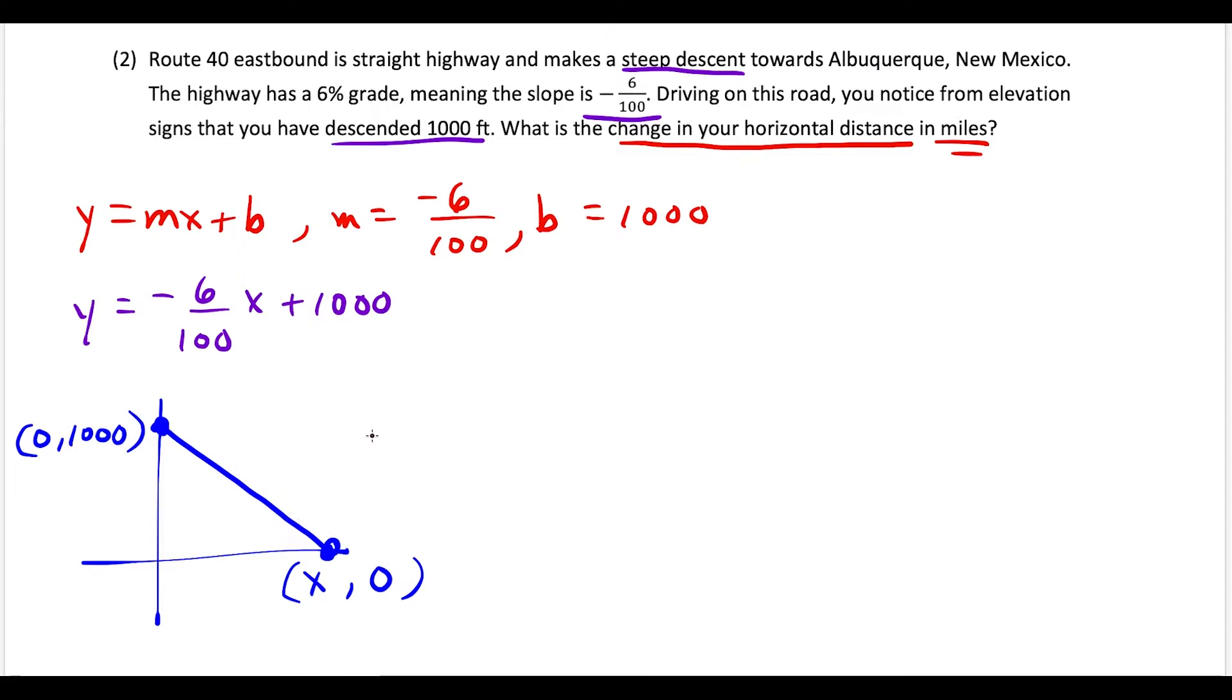Think about what we know here. We know the slope of our line is -6/100. In general, slope equals (y₂ - y₁)/(x₂ - x₁). So I could label this as (x₁, y₁) and label this point as (x₂, y₂). Now we plug in our m value of -6/100.